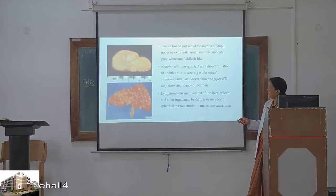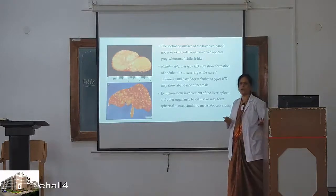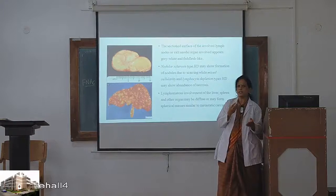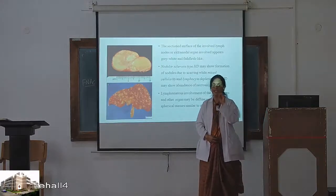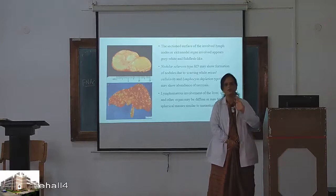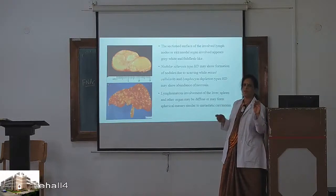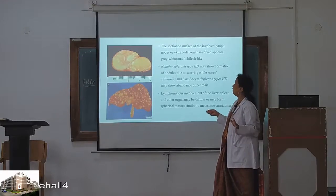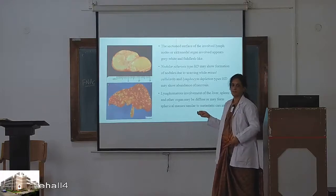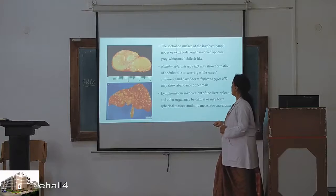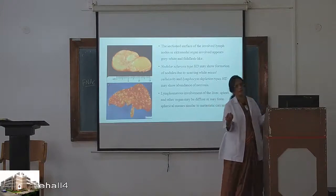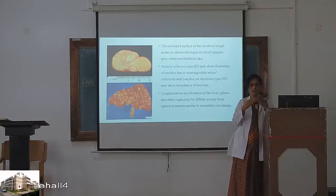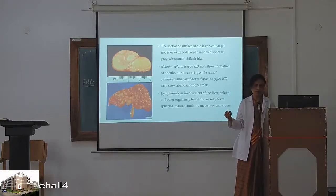For biopsy, the lymph node is taken and cut. A tuberculosis lymph node shows caseation, but in lymphoma we do not see caseation — instead we see a homogenous appearance likened to a fish flesh appearance. The cut section is homogenous and pink. The lymph nodes are discrete, not matted, with a homogenous pink fish flesh appearance on cut section.